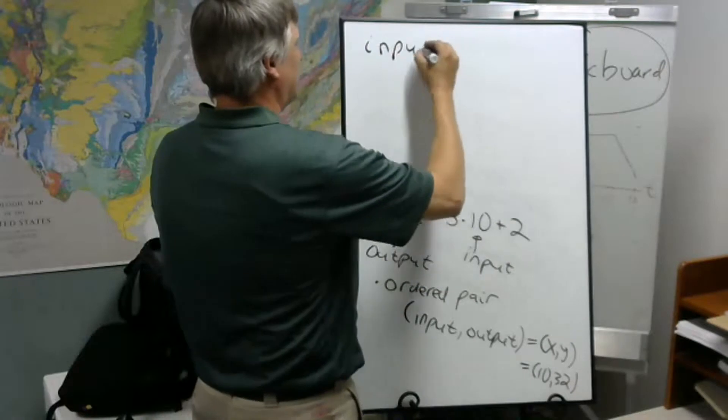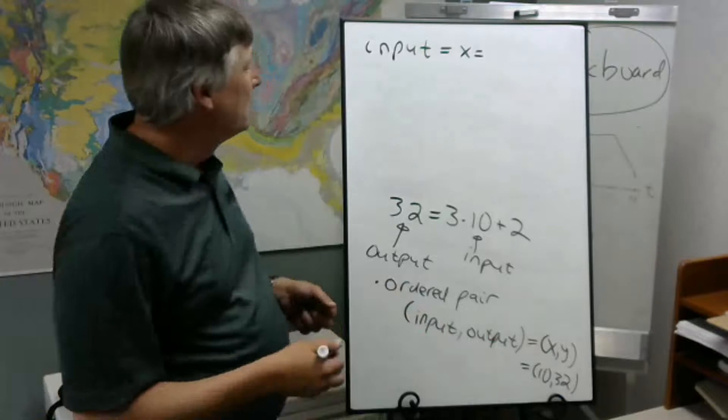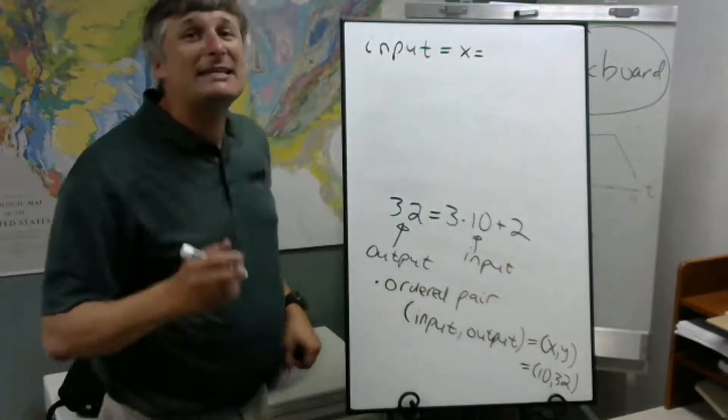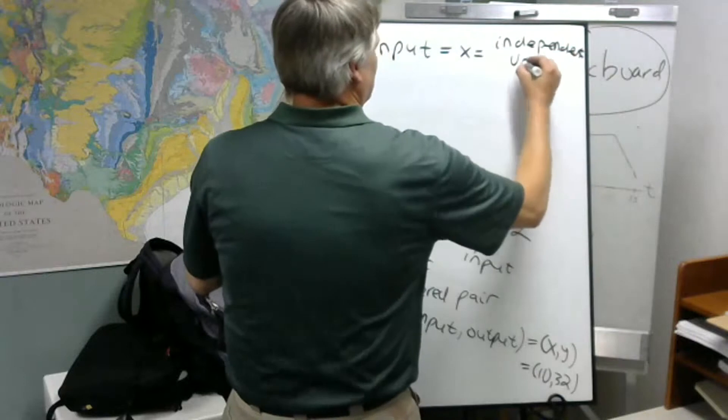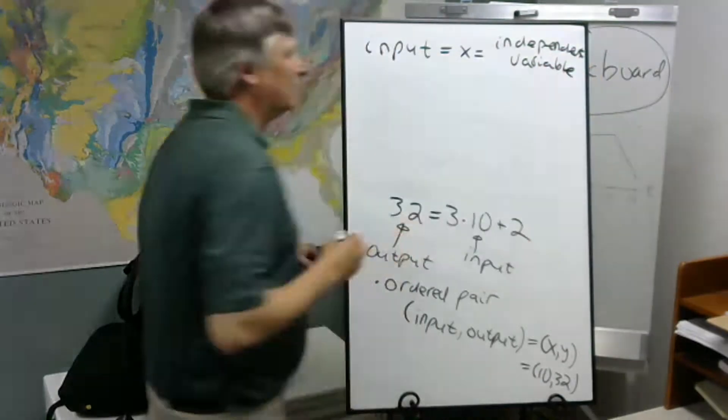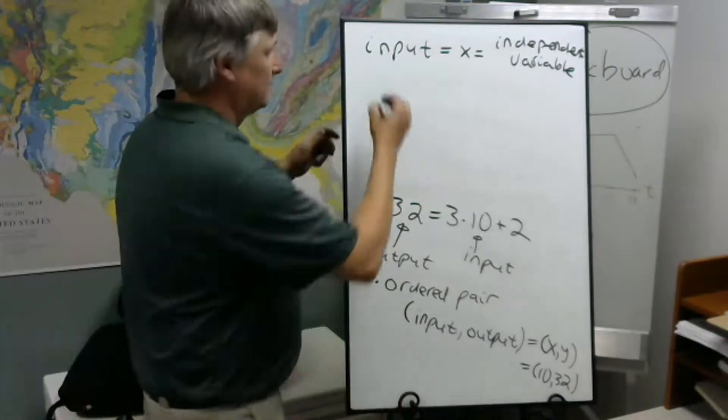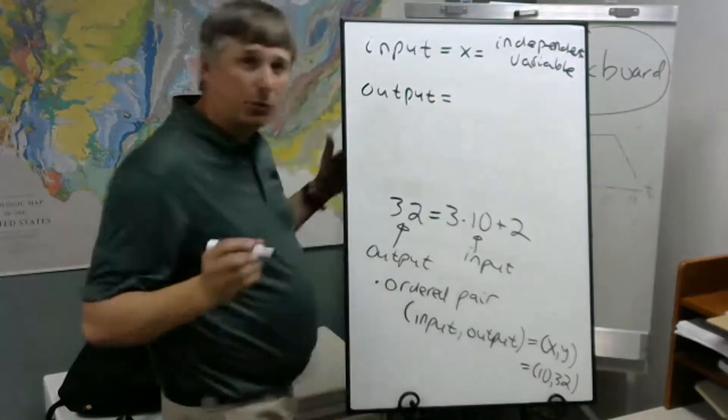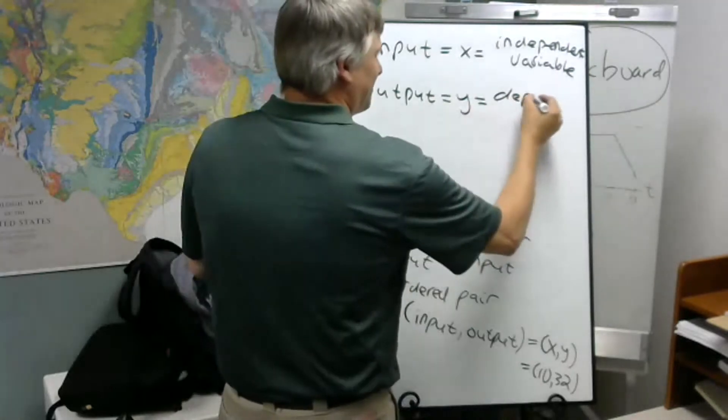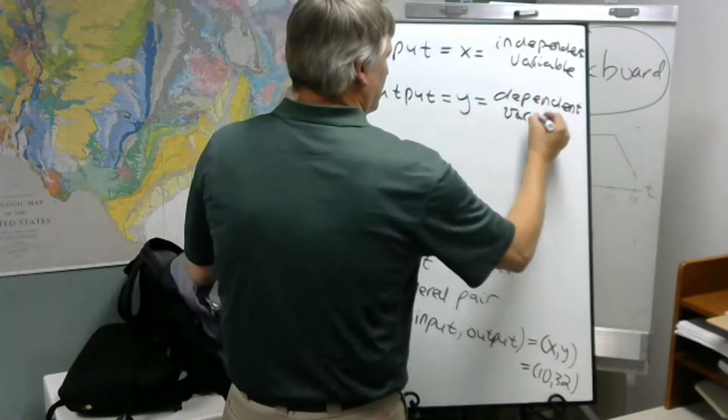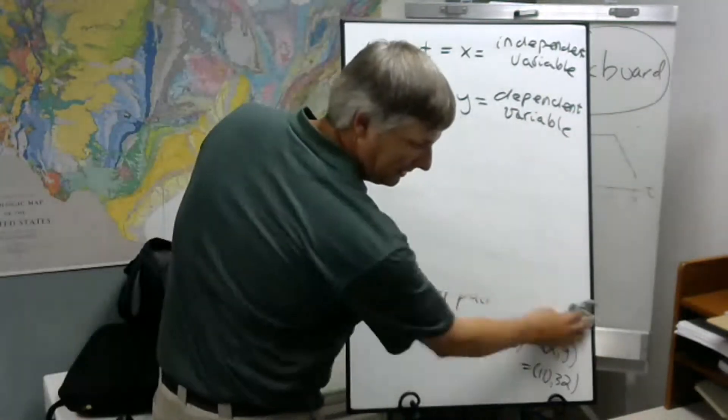The input for X, we're free to choose X. Now there are some restrictions and we'll talk about that later in class, but for the most part we're free to choose X. So we call this the independent variable. Now the output, it's a result of what we chose from the input and what we did to the input. So the output depends on our choice of X and what the function's doing to it. So the Y is the dependent variable.